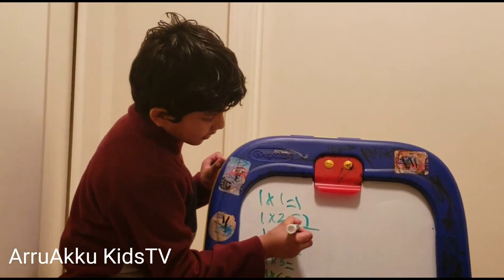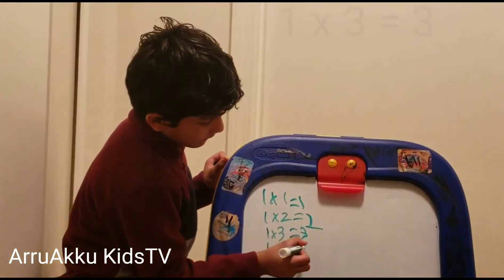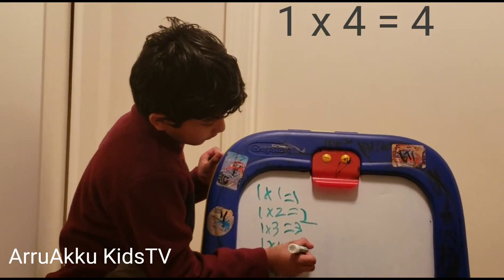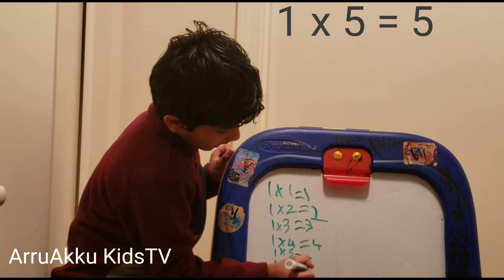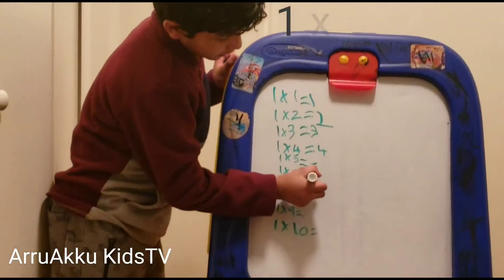1 times 3 is 3. 1 times 4 is 4. 1 times 5 is 5. 1 times 6 is 6.